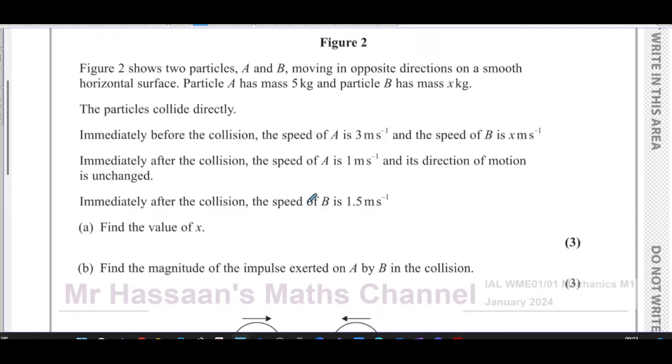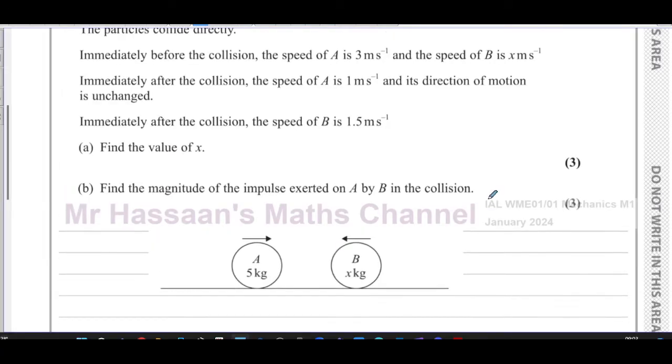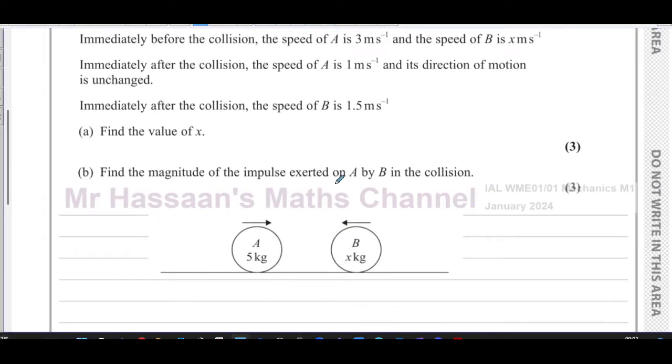Immediately after the collision, the speed of B is 1.5 meters per second. Find the value of X and the magnitude of the impulse exerted on A by B in the collision. Let's keep this diagram down here so we don't have to keep scrolling.